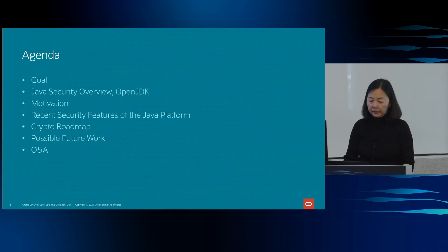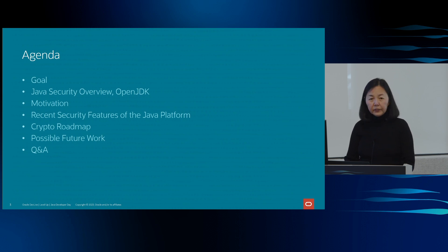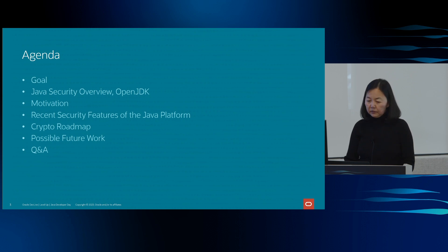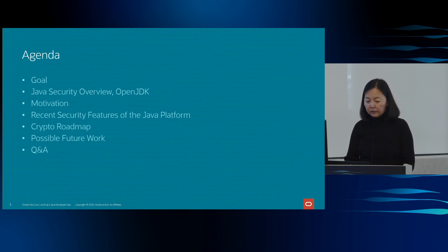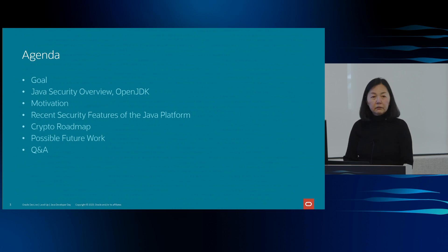Here is the agenda for this session. I will start with the goal of this talk, then do a quick overview of Java Security and how we do our work through the OpenJDK project. Hopefully most of you are familiar with the primary components and features of Java security. I will then discuss the motivation and importance of evolving the security of the platform. After that, I will hand it over to Brad, who will discuss some security features we have added recently. Next, I will go over the Java crypto roadmap and some interesting projects we are investigating for future releases. Finally, we will open it up for Q&A.